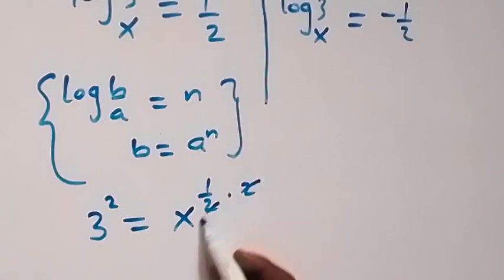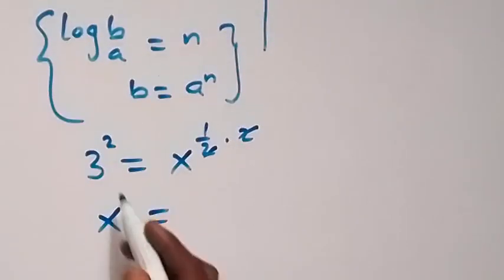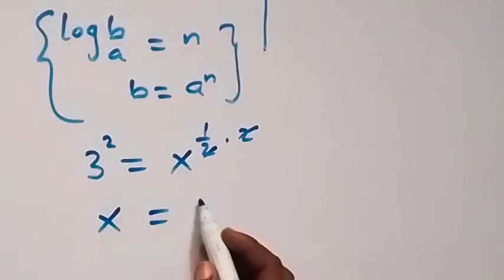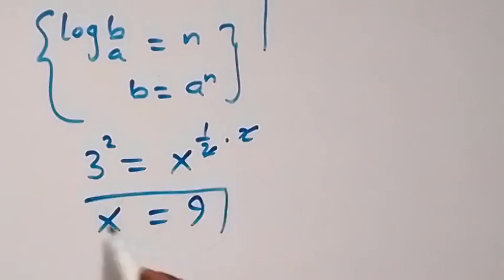For the first case, converting from logarithmic form: x raised to the power 1/2 equals 3, which means x^(1/2) = 3. Squaring both sides, x equals 3^2, which is 9. So x equals 9.